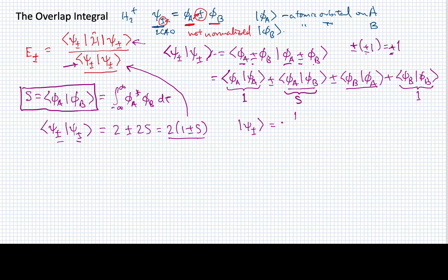If I wanted to normalize psi plus or minus, this is also what we would need in order to normalize it. We would divide by the square root of this because we have two factors here. So a normalized version of psi plus or minus might look like this.